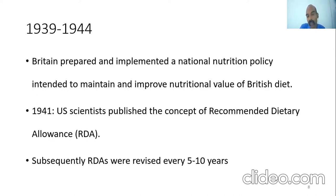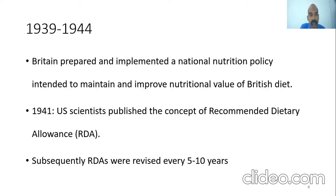About the same time in 1941, U.S. scientists first published the concept of Recommended Dietary Allowances, or RDAs, which were thereafter revised every five to ten years. Between 1944 and 1954, several countries and the WHO Food and Agricultural Organization developed their own dietary standards influenced by the first set of RDAs.